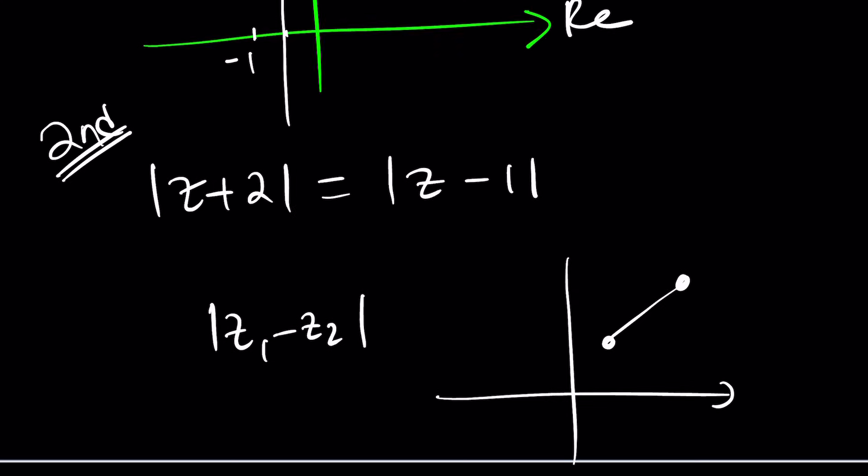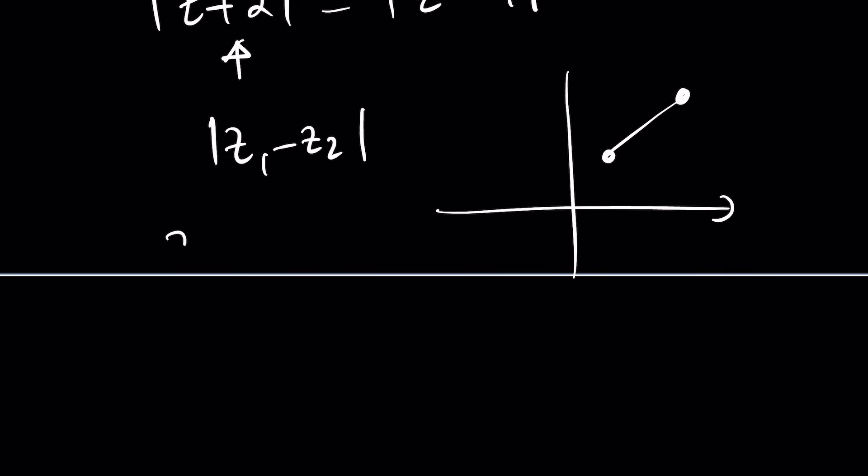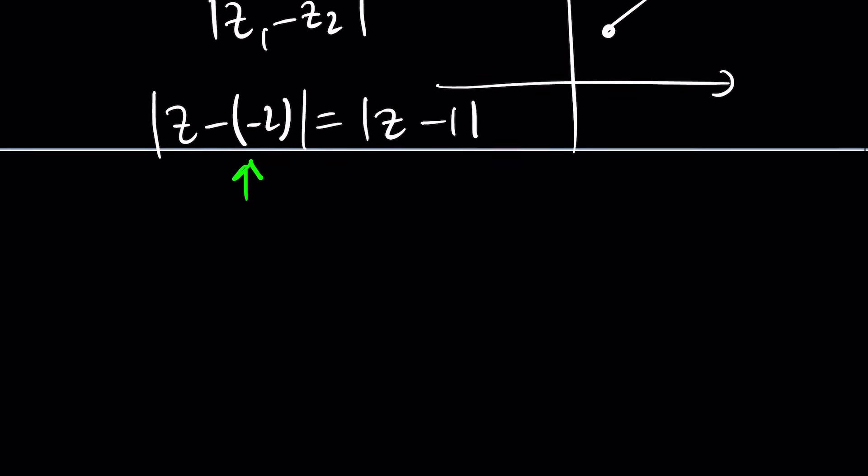So what does this mean from that perspective? Z plus 2 can be written as Z minus negative 2. And of course, this is already a minus sign. And I do need a minus sign to turn it into distance. So this basically means the distance between Z and negative 2. But what is negative 2? Negative 2 is a real number. And on the complex plane, I can basically just plot it as follows. This is negative 2.